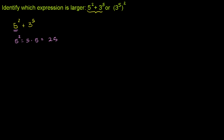And what's 3 to the fifth? 3 to the fifth is equal to 3 times 3 times 3 times 3 times 3. 3 times 3 is 9. 9 times 3 is 27. 27 times 3 is 81. And 81 times 3 is 243. So this up here is the same thing as 25 plus 243.